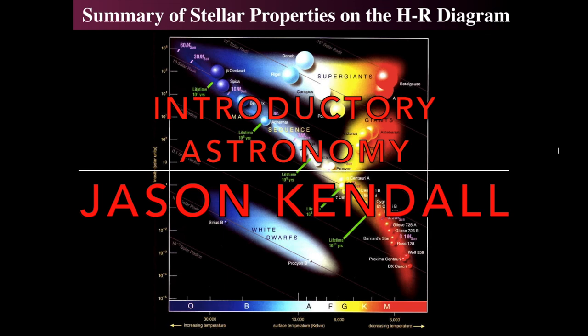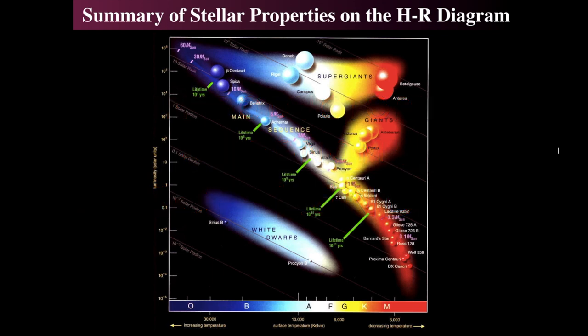The HR diagram is a plot of luminosity up and down versus temperature left and right, with increasing temperature going to the left. Cooler stars are on the right, hotter stars on the left, dimmer stars at the bottom, and brighter stars at the top. By brighter, we mean more luminous, not brighter in the sky — and that's an important difference to note.